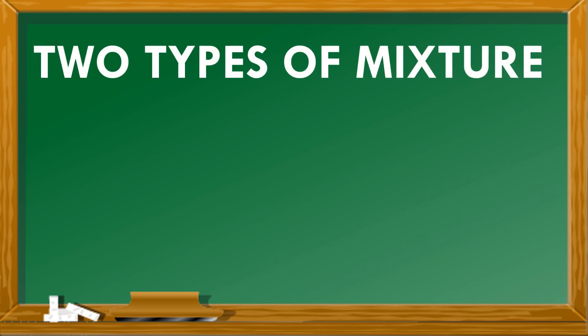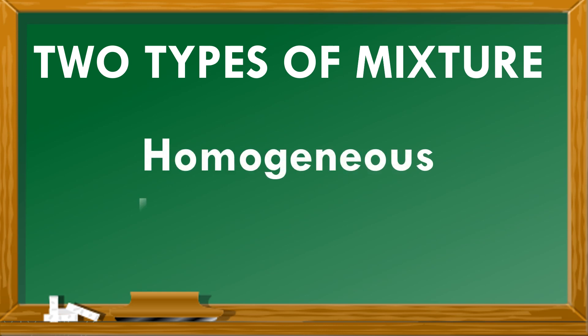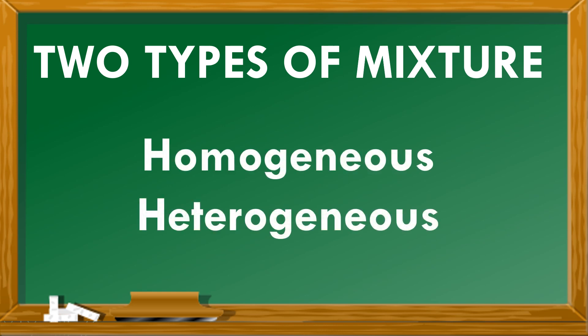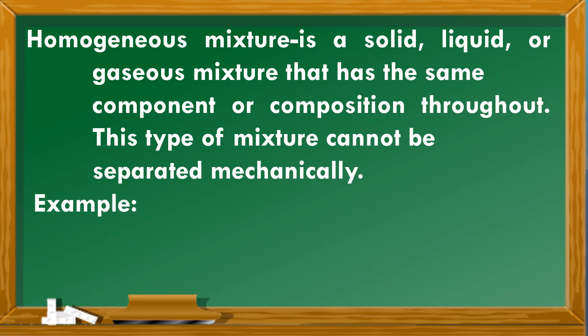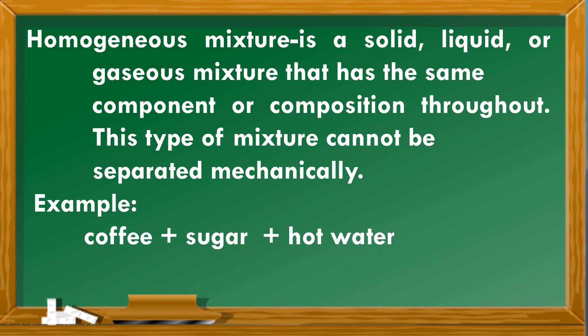Now there are two types of mixture: homogeneous and heterogeneous mixture. A homogeneous mixture is a solid, liquid, or gaseous mixture that has the same component or composition throughout. This type of mixture cannot be separated mechanically — you cannot pick them up and separate them. An example is coffee plus sugar plus hot water.